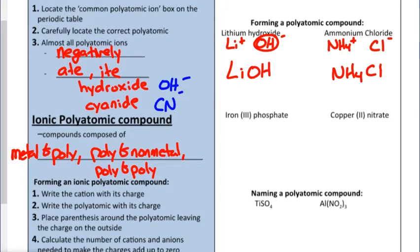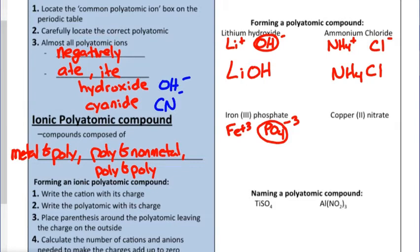For iron(III) phosphate: iron is a plus three transition metal indicated by the Roman numeral. Phosphate — we hear the -ate sound as a clue — is PO4, a polyatomic ion with a negative three charge. That subscript four is part of what makes phosphate the phosphate ion; it doesn't mean we have four ions combined. With plus three and minus three, we only need one of each — one iron ion and one PO4 phosphate ion.